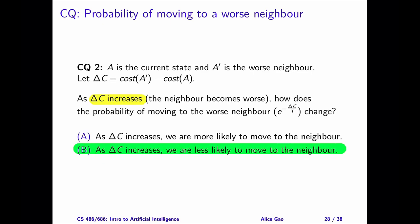Similarly, as the neighbor becomes worse, it becomes riskier to move to that neighbor. After all, our goal is to minimize the cost of the current state. Therefore, it makes sense to decrease the probability of moving to the neighbor.